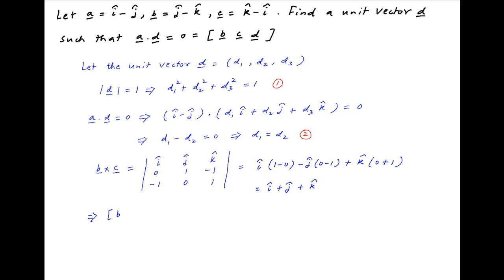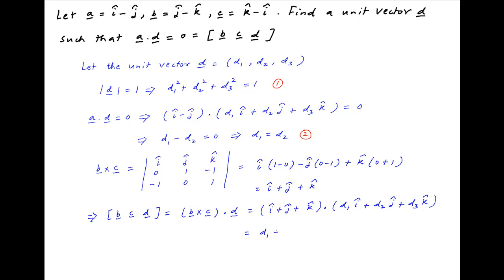Therefore the scalar triple product of vectors b, c, and d, which equals (b×c)·d, is equal to (i + j + k)·(d1·i + d2·j + d3·k), which simplifies to d1 + d2 + d3 = 0, since the scalar triple product is given to be 0. Let us call this result 3.